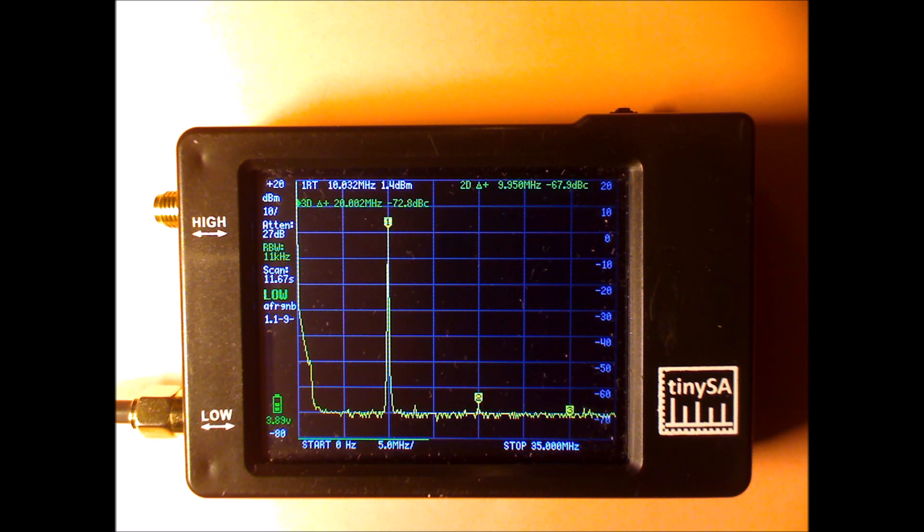So any harmonics that is above the 70 dB, you can be sure that it is not internally generated, but it's coming from the signal generator.